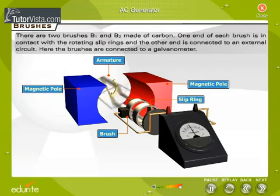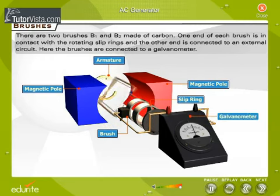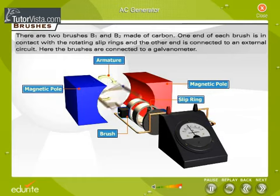Brushes: There are two brushes, B1 and B2, made of carbon. One end of each brush is in contact with the rotating slip rings and the other end is connected to an external circuit. Here, the brushes are connected to a galvanometer. Observe that the brushes do not rotate with the coil.